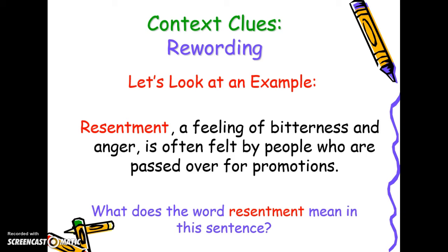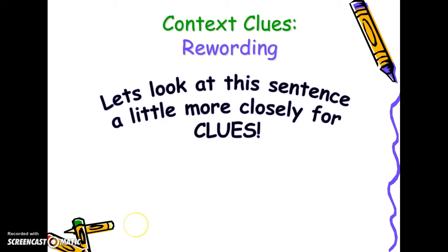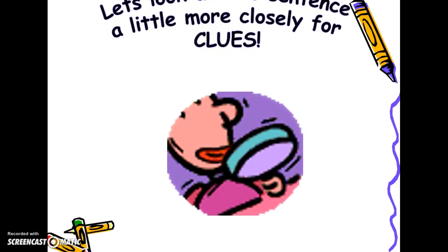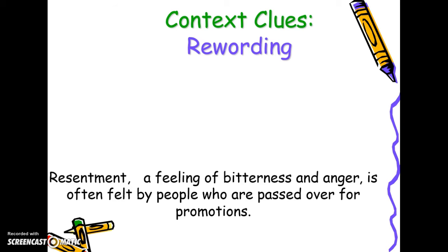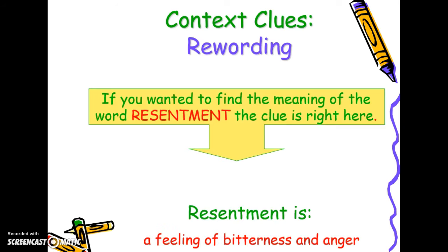Let's look at an example. 'Resentment — a feeling of bitterness and anger — is often felt by people who are passed over for promotions.' What do you think resentment means in this sentence? The clue is right here: resentment is a feeling of bitterness and anger, written directly into the sentence. That is what you would highlight on your test.